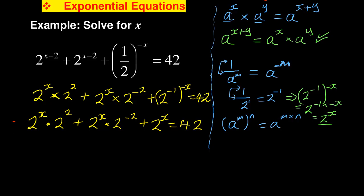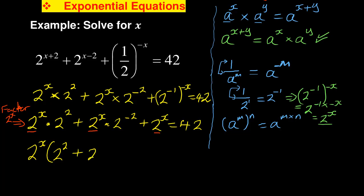The next step is to factorize. You can see that 2 to the exponent x is common in all three terms. Factoring it out, what remains inside the bracket is: 2 to the exponent 2, plus 2 to the exponent negative 2, plus 1. Note that when you divide 2^x by 2^x you get 1 — most students say nothing remains, but there is always a 1.